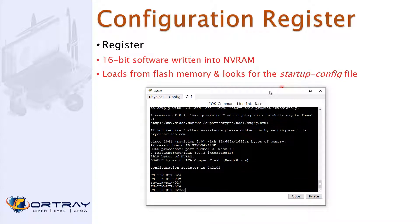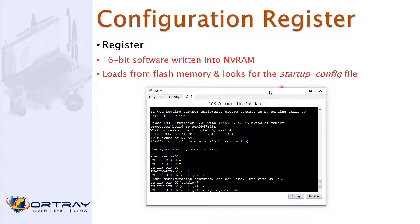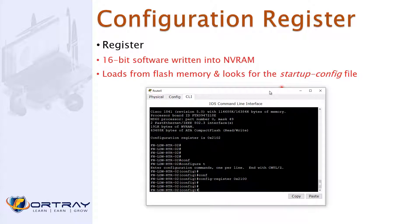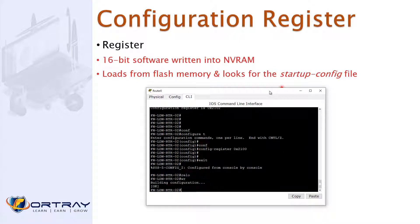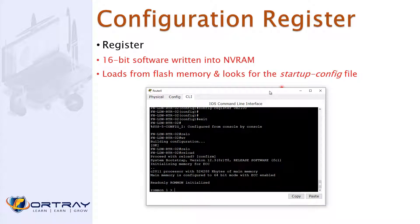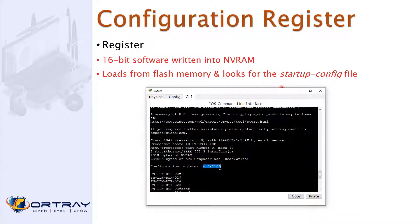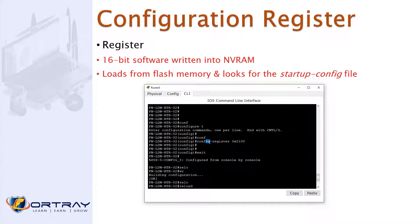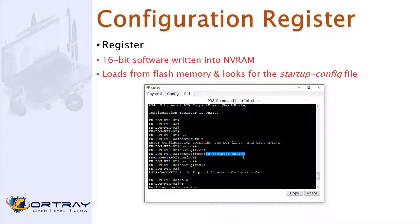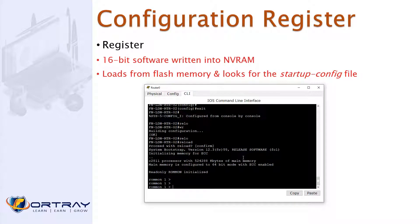In config mode, I change the configuration register value from the default 0x2102 to 0x2100, then reload. After the reload, you can see the router goes into ROM monitor mode. ROM monitor mode is used for troubleshooting — for example, if the IOS is corrupted, the configuration file is missing, or most commonly when a password reset is needed. The value 0x2102 tells the router to load from flash and look for the startup config; changing it alters that behavior.